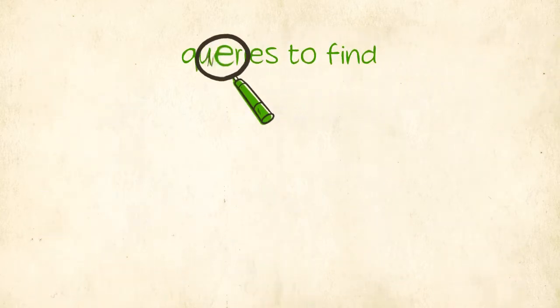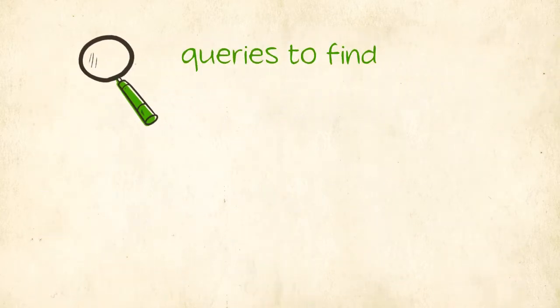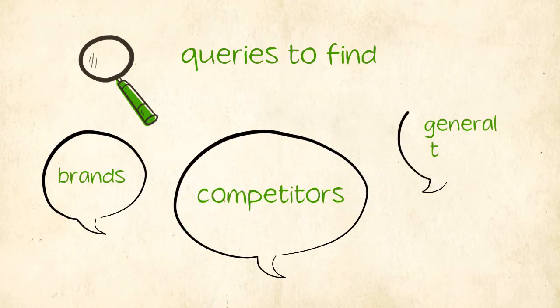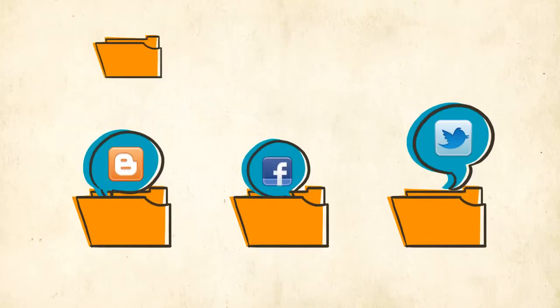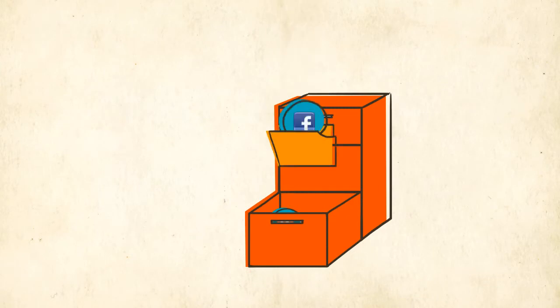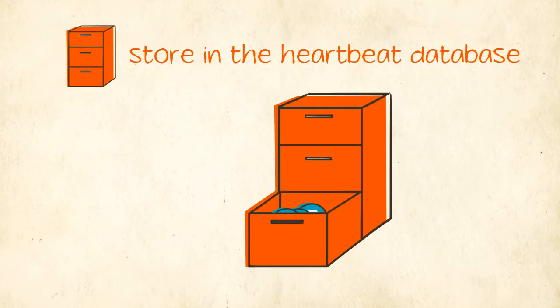Queries are used to find conversations. Queries usually reflect your brand, competitors, or general topics. Tags are a set of rules used to organize the conversations that you have found. All of the conversations you have found and organized are stored in the Heartbeat database.